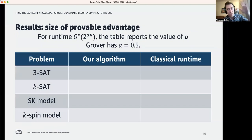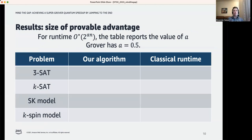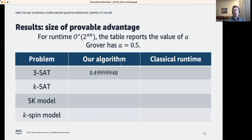For specific problems, we can show an improvement over Grover. Runtimes scale as 2^{a·n}, where Grover gives 2^{0.5n}. For the 3-SAT problem, we show our algorithm runs in time 2^{0.4999948n} — slightly better than Grover's algorithm. While very small, this achieves our goal of proving a constant improvement over Grover.